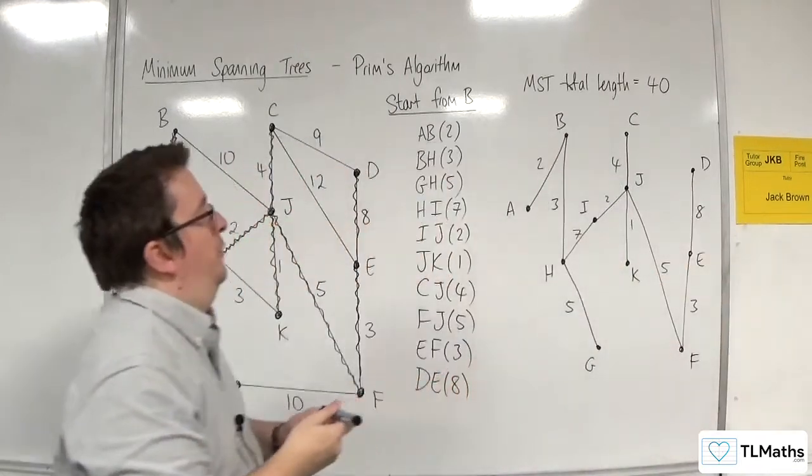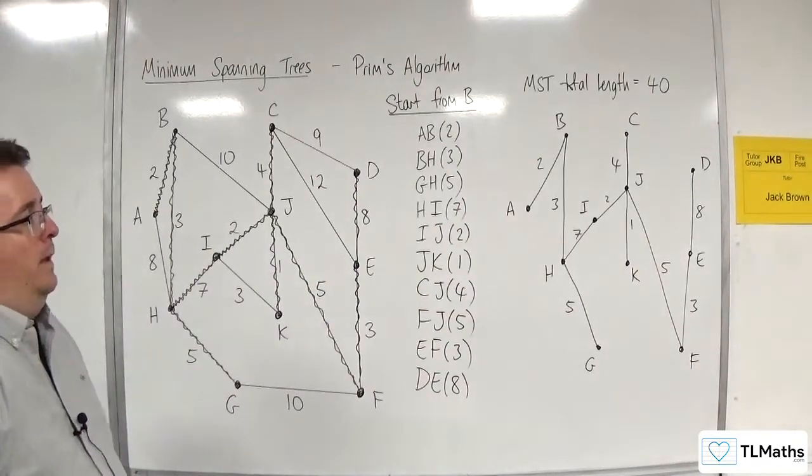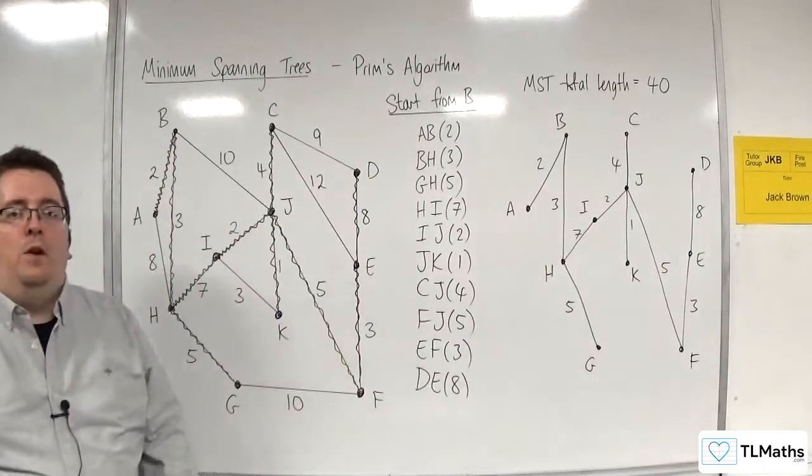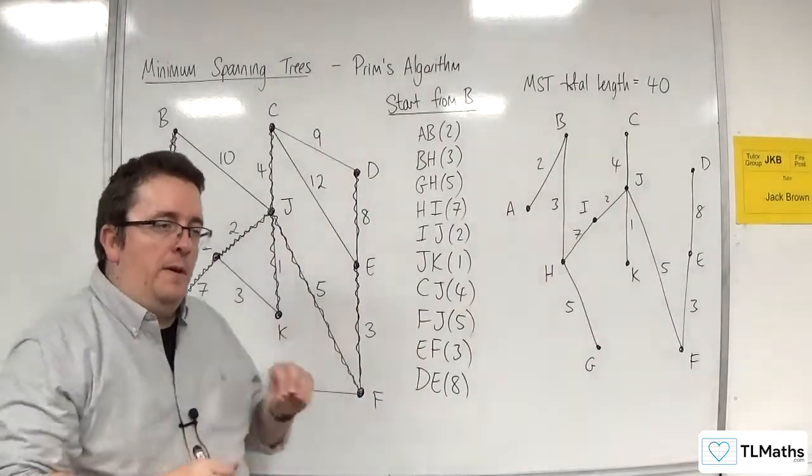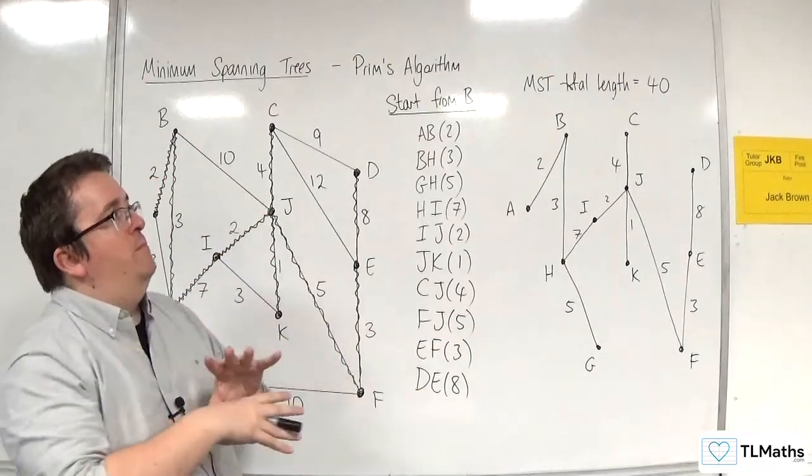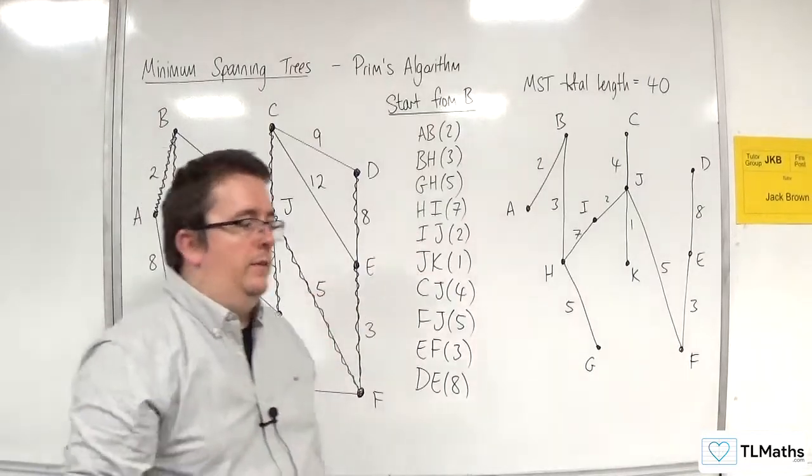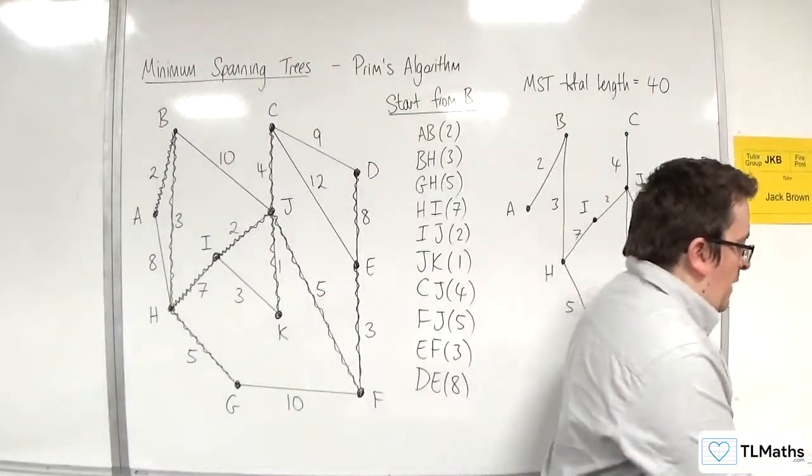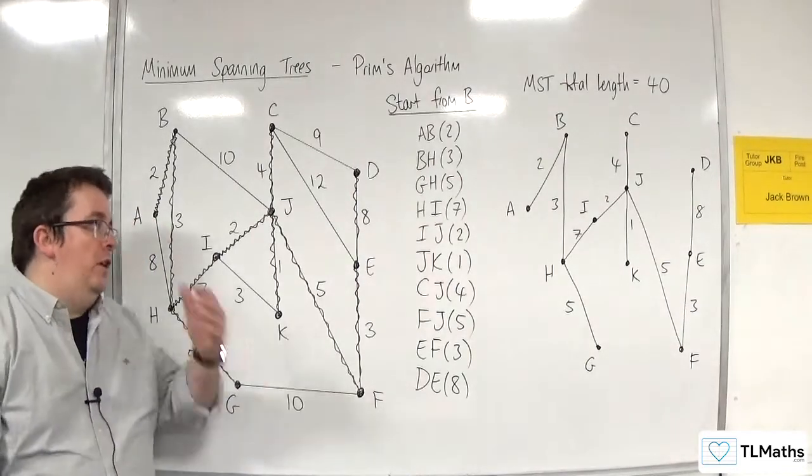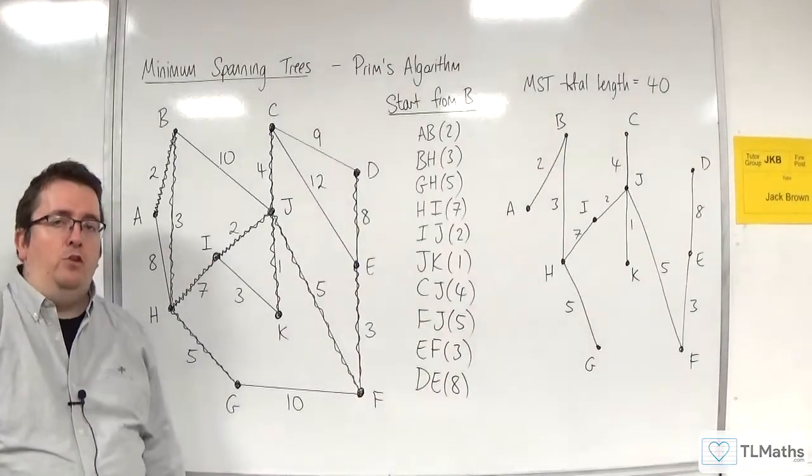So with Kruskal's, we saw edges kind of appear. They could appear here, here, here, here, here, here, and it slowly builds together. Whereas with Prim's algorithm, it kind of grows out from your starting vertex, connecting vertices. So they work, Prim's and Kruskal's work in different ways, and you can kind of see how they work visually as you build up the minimum spanning tree.